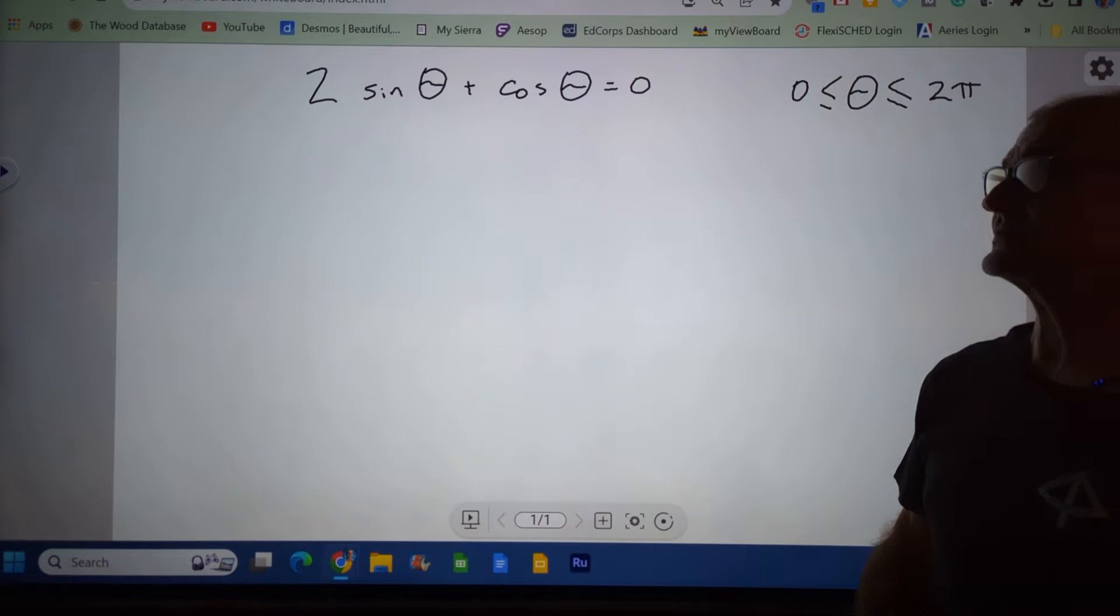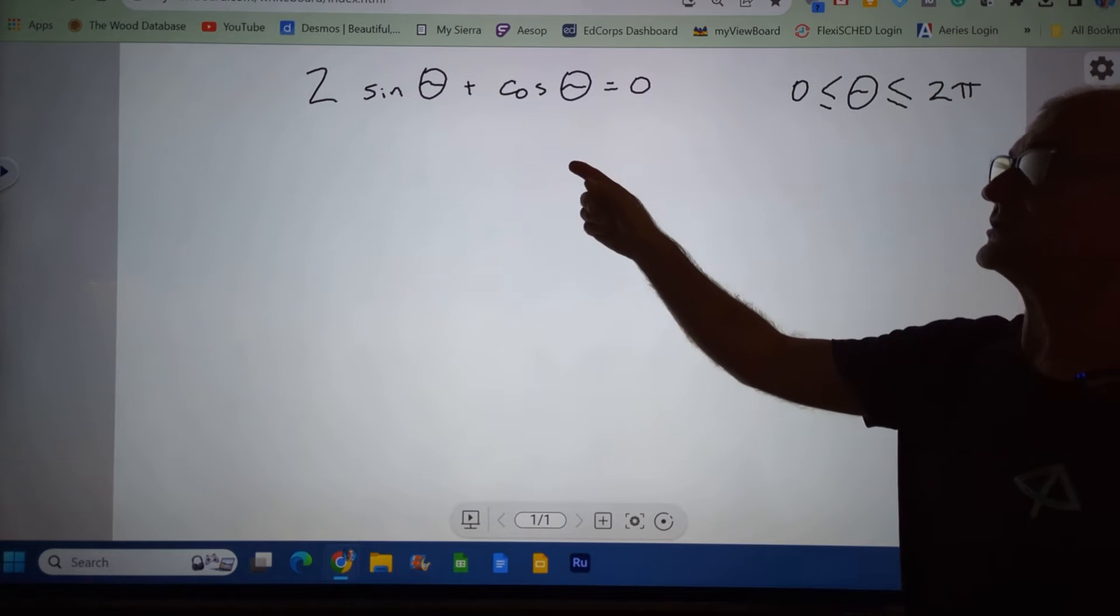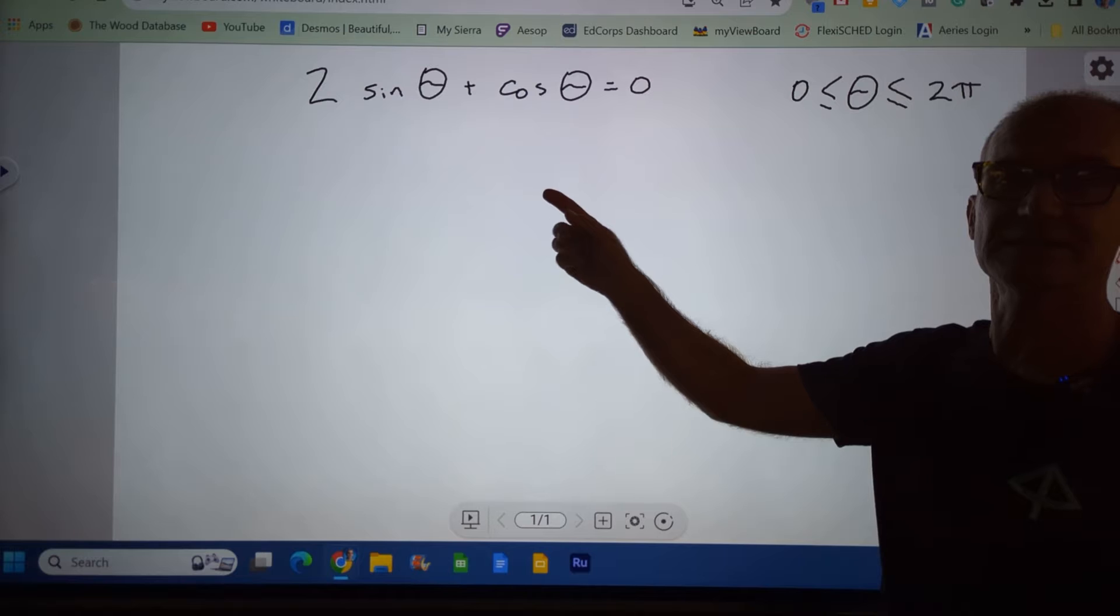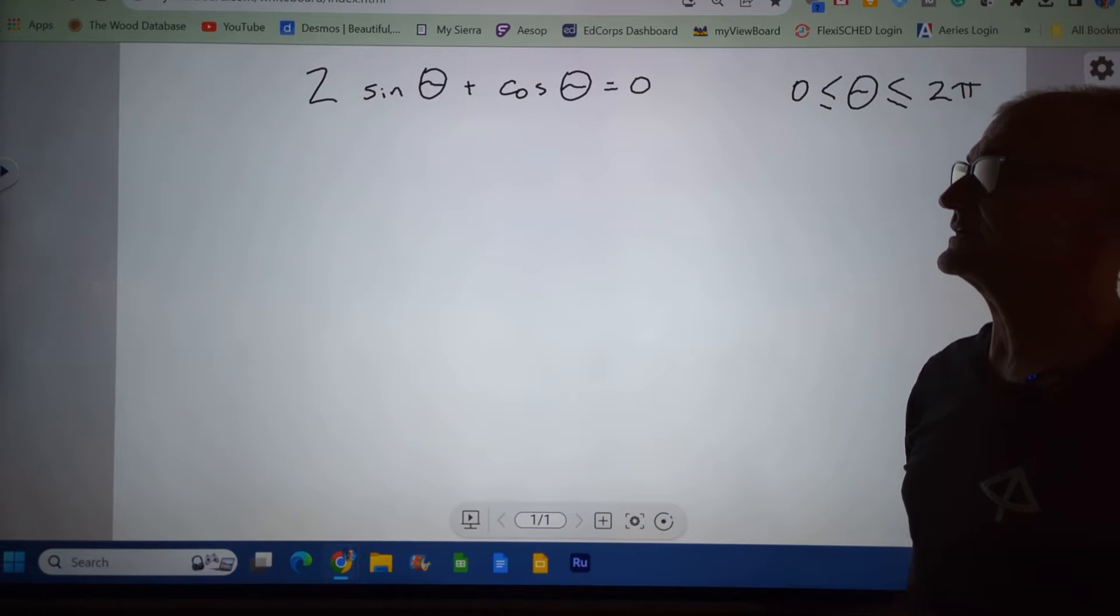And this is solving trig equations. So I have multiple arguments here, so I'm going to have to use trig identities and work with this equation to get a singular identity.